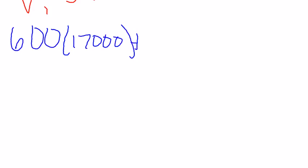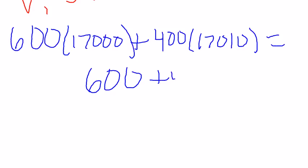When you plug that into the formula, you do 600 times 17,000 plus 400 times 17,010 equals 600 plus 400 times V prime. And that simplifies.